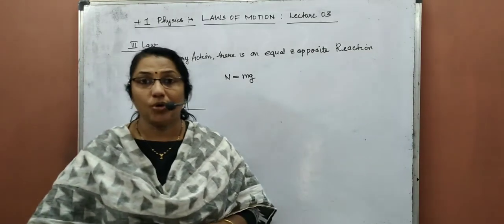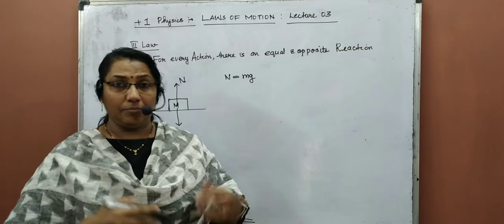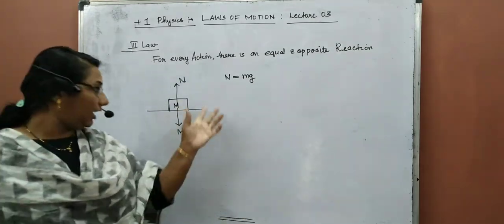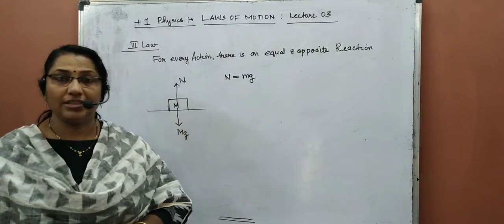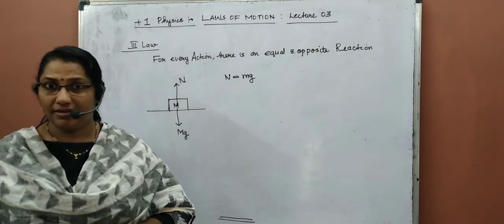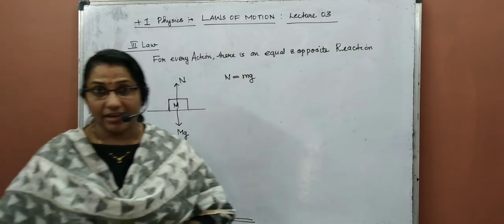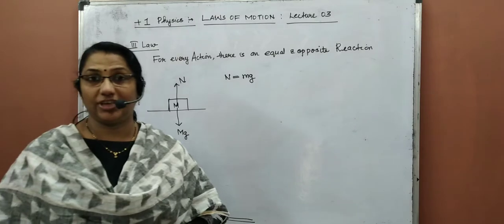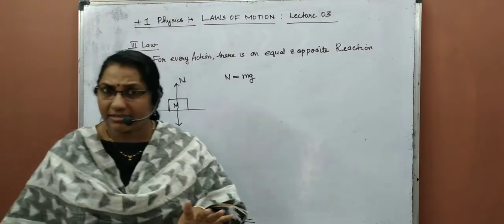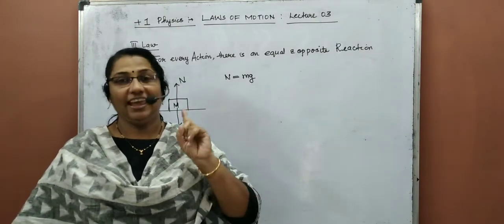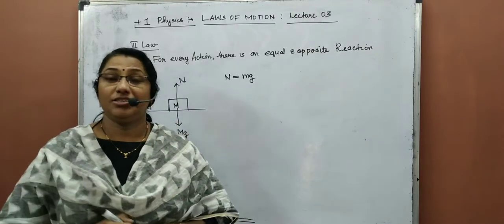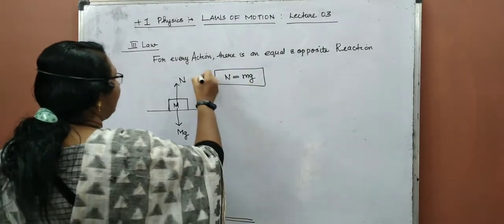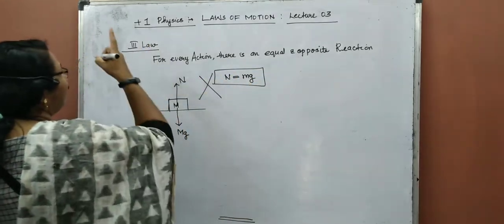We can see the weight of the block acts vertically downward on the surface, and the surface provides an equivalent normal reaction upwards. We have already written this equation: N is equal to Mg. So I am asking you — is N equal to Mg the action-reaction pair? No. It is not at all the action-reaction pair stated by Newton.